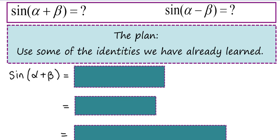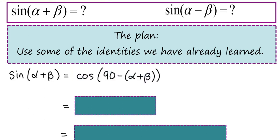So now we want to find out what sine of alpha plus beta equals and sine of alpha minus beta. We don't really want to do any more than necessary, so let's see if we can use some of the identities we have already learned to make this proof simpler. The sine of alpha plus beta is equal to the cosine of 90 minus alpha plus beta, and that is because we have those things called co-function identities.